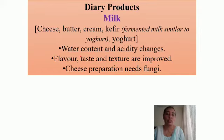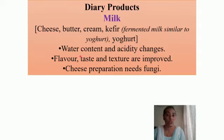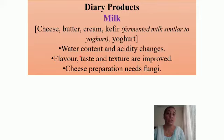We know that cheese, butter, cream, curd, and yogurt all have different textures. You get different items with different textures. The taste is also different, and we can create various flavors by adding flavoring agents like ginger, garlic, or various other agents to get a product of a desired flavor.